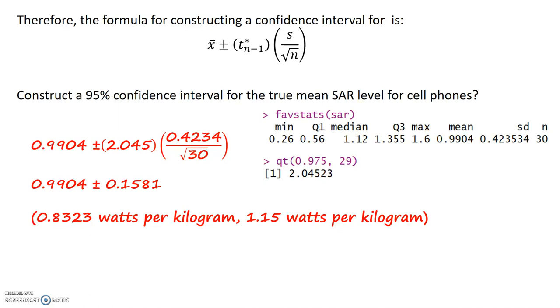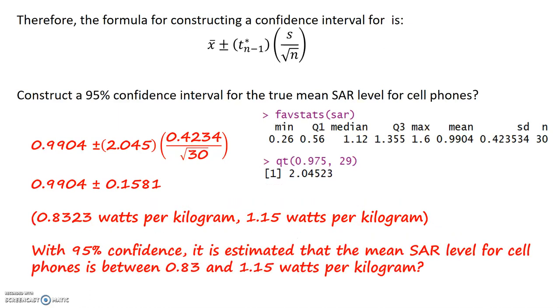To interpret this confidence interval, we can say, with 95% confidence, it is estimated that the mean SAR levels for cell phones is between 0.83 and 1.15 watts per kilogram.